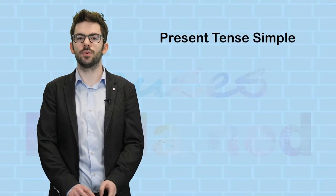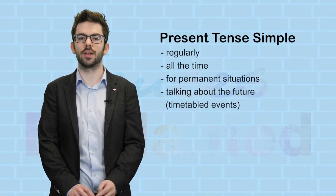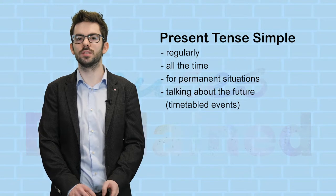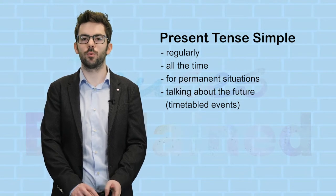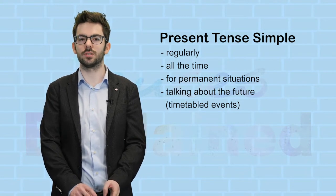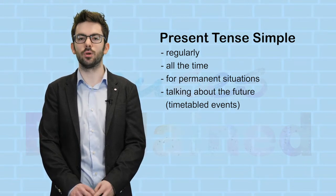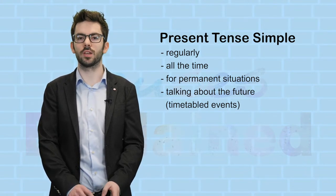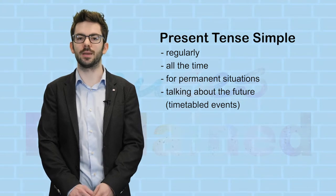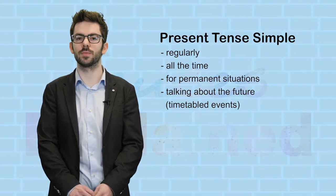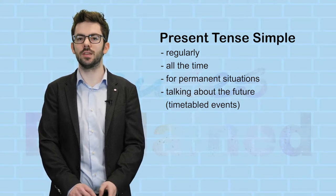The present simple can be used for things that happen regularly, all the time, or for permanent situations. It can also be used when talking about the future, especially with timetabled events. Now let's see how these forms are used.